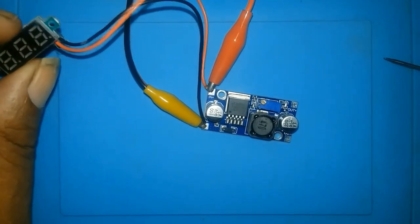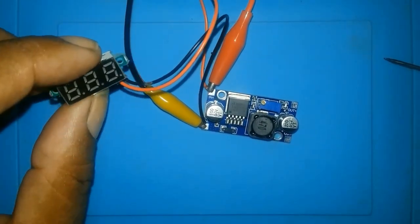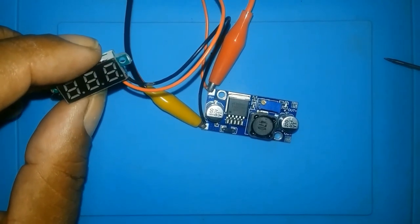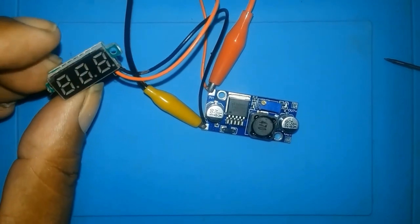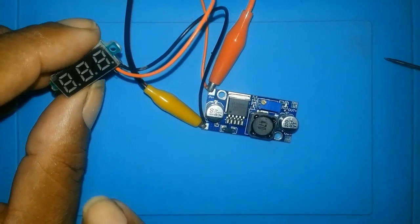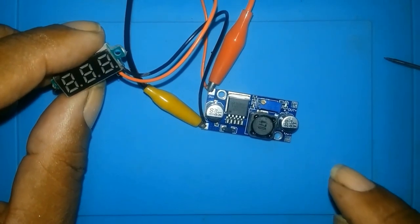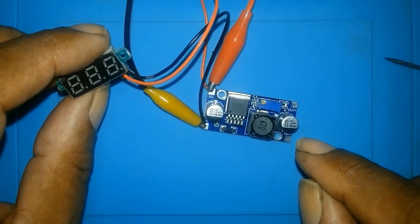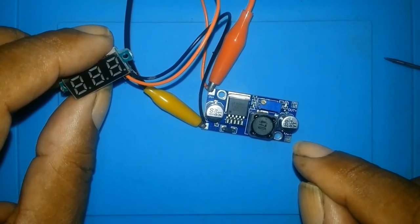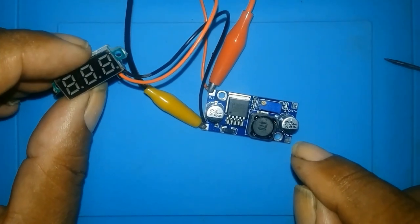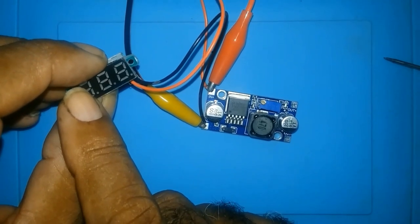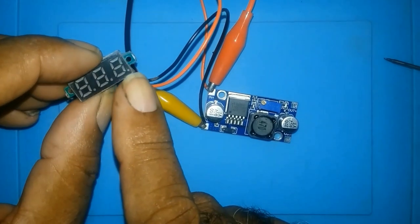And one thing, this little gadget should only be used if you have a fixed voltage. There is another one which has three wires. The three wires would go down to 1.5, 1.2. This one, once it hits 4 volts, it cuts off.